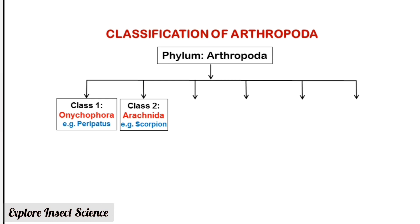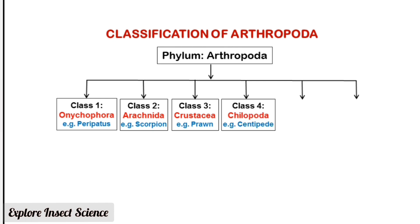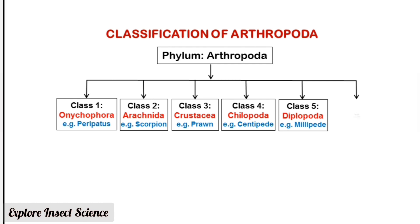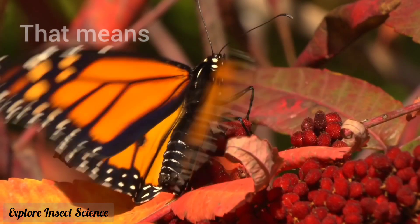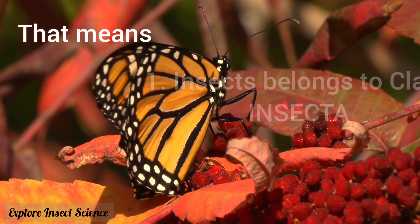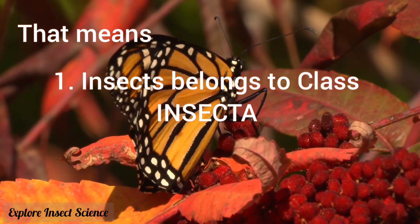The third class is Crustacea, with an example being the prawn. The fourth class is Chilopoda, with an example being the centipede. The fifth class is Diplopoda, with an example being Millipede. The sixth class is Insecta, with an example being the butterfly.